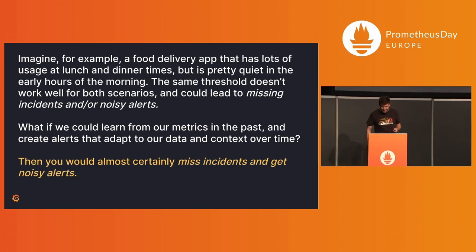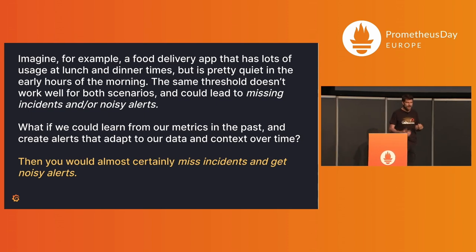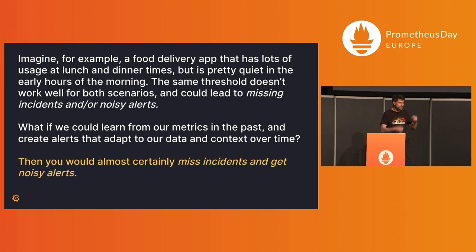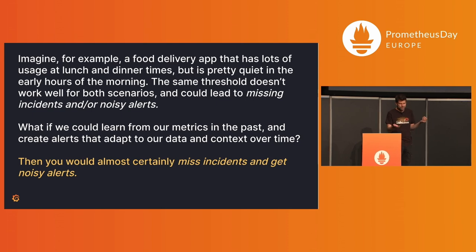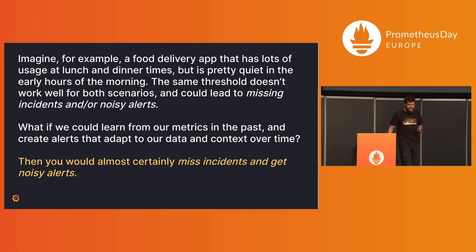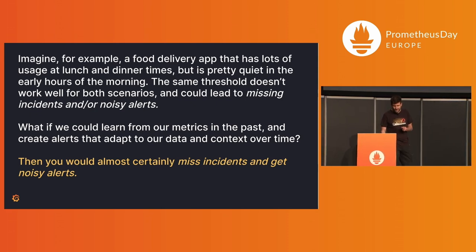Why is that the case? First of all, outages are not necessarily looking like anomalies. Especially nowadays with high availability services — three nines, four nines — if you have just fractions of a percent of errors, you are already out of your SLO. But the patterns look normal. Your anomaly detection system might not even see that you are burning your error budget slowly. You will miss outages if you rely on anomaly detection for alerts.